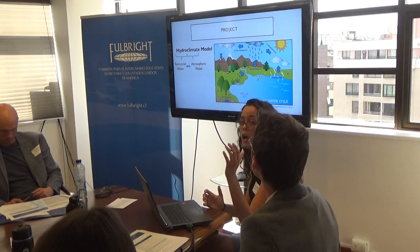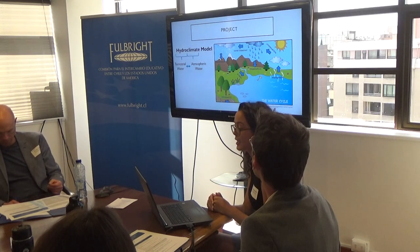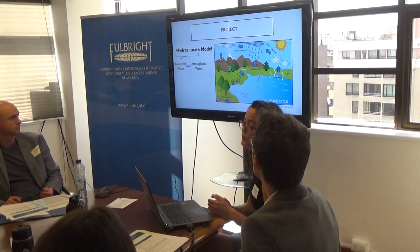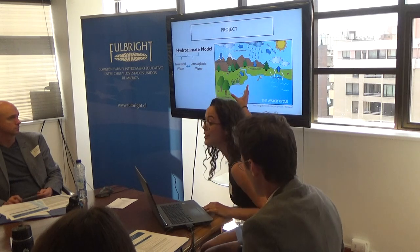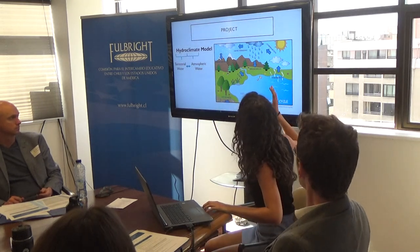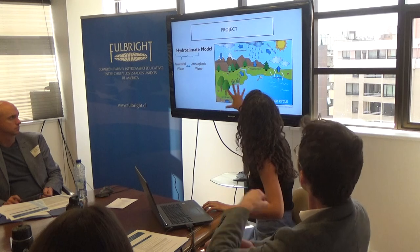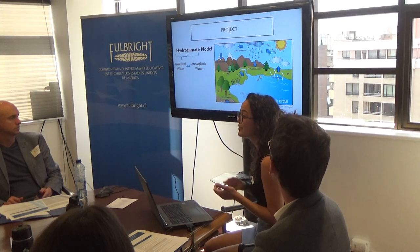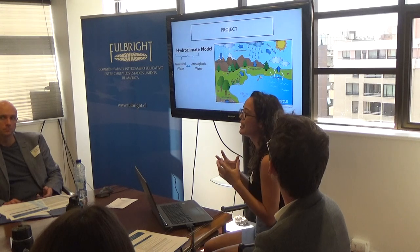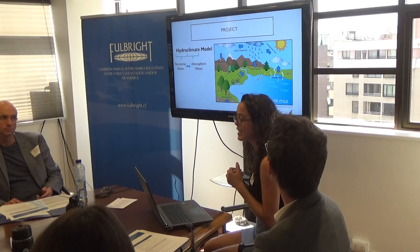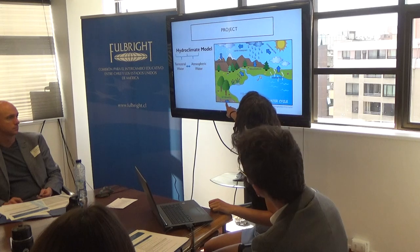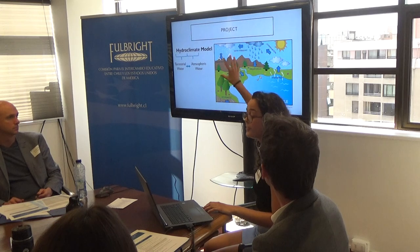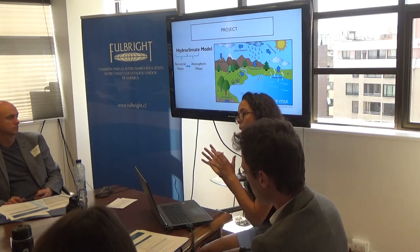That brings me to my project, which will look at a hydroclimate model and how it works over different climates in Chile. The term 'hydroclimate' refers to the terrestrial water — all of the water on Earth, whether in the form of snow, lakes, rivers, oceans, water in vegetation, subsurface water, and groundwater — and how that water interacts with atmospheric water, which is where the 'climate' part of hydroclimate comes into play.